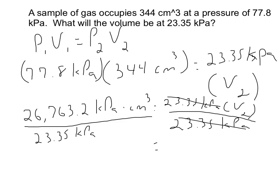And now we go ahead and simplify. So 23.35 kilopascals canceled on that side, leaving us with our V2. And if I look at this, I know my units on the left side cancel out kilopascals, kilopascals, leaving me with centimeters cubed. And now I simply just need to divide those two numbers to get my final answer.